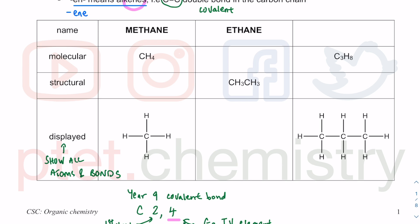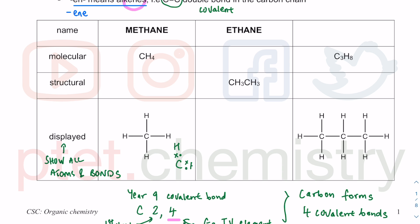Carbon will share four electrons, therefore forming four covalent bonds. That is probably the most important takeaway from this tutorial — carbon forms four covalent bonds because it wants to share four electrons to complete its outer shell. Each bond to hydrogen is a single covalent bond, because hydrogen only has one electron in the outer shell. In the dot-and-cross diagram, one electron from each atom forms one covalent bond of two electrons.